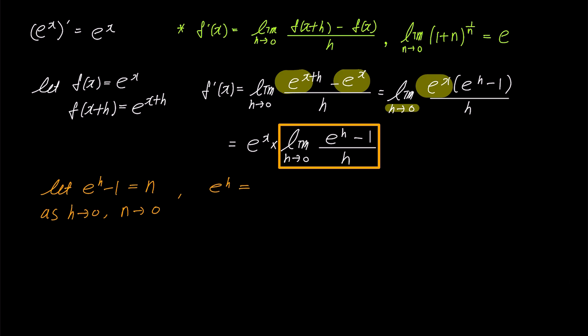Then, we can express e to the power of h as 1 plus n, and by taking the natural logarithm of both sides, we have ln e to the power of h equals ln 1 plus n, simplifying the left side to h.